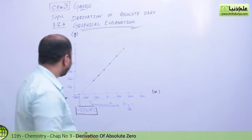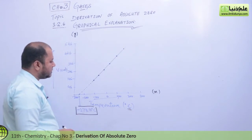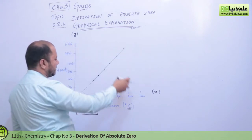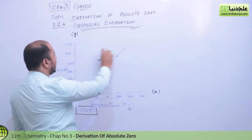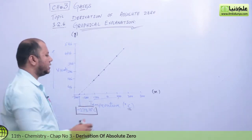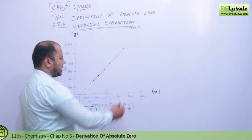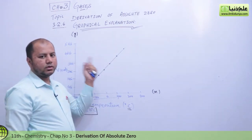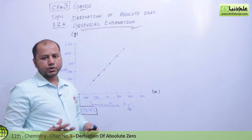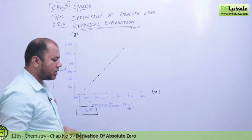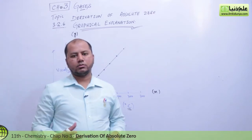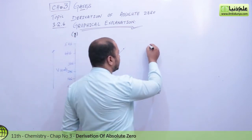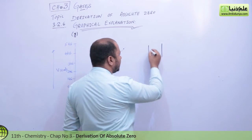The graph is telling us that if the volume of a gas is high and you keep decreasing the temperature — look, at 200 degrees the volume is 446, and when temperature comes down to 100 the volume also decreases. When you decrease the temperature, the gas volume decreases. This is exactly how it should be.